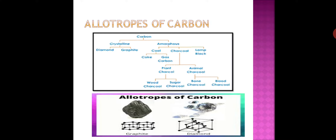Allotropy means some elements occur in nature in more than one form. The chemical properties of these different forms are the same but their physical properties are different. This property of an element is called allotropy. Carbon, sulfur, and phosphorus also exhibit allotropy.